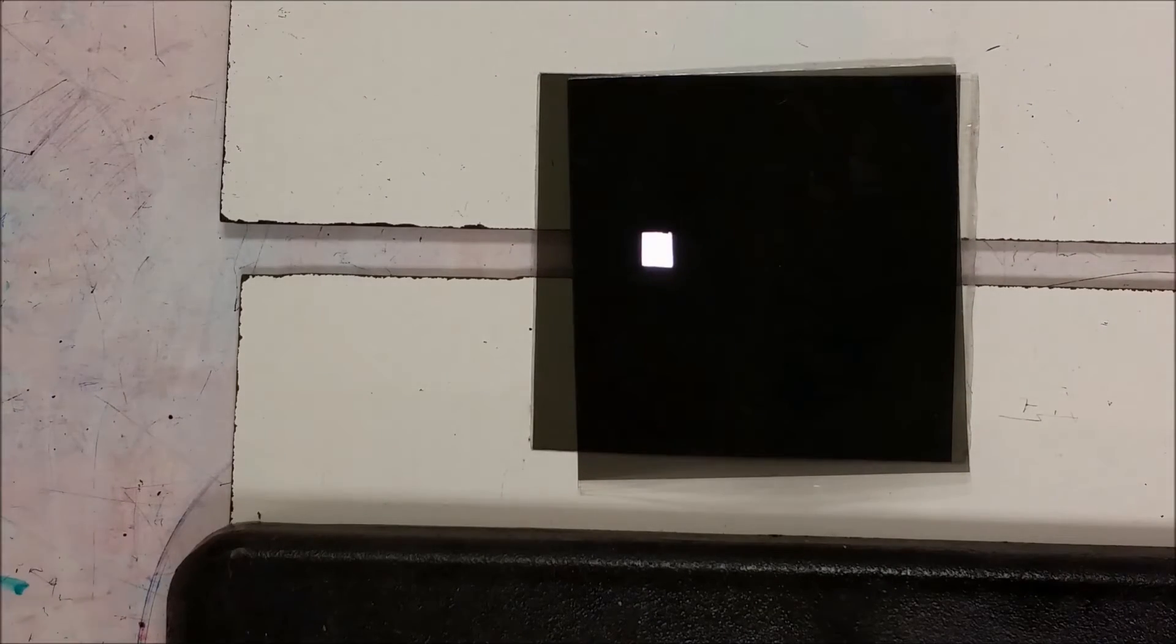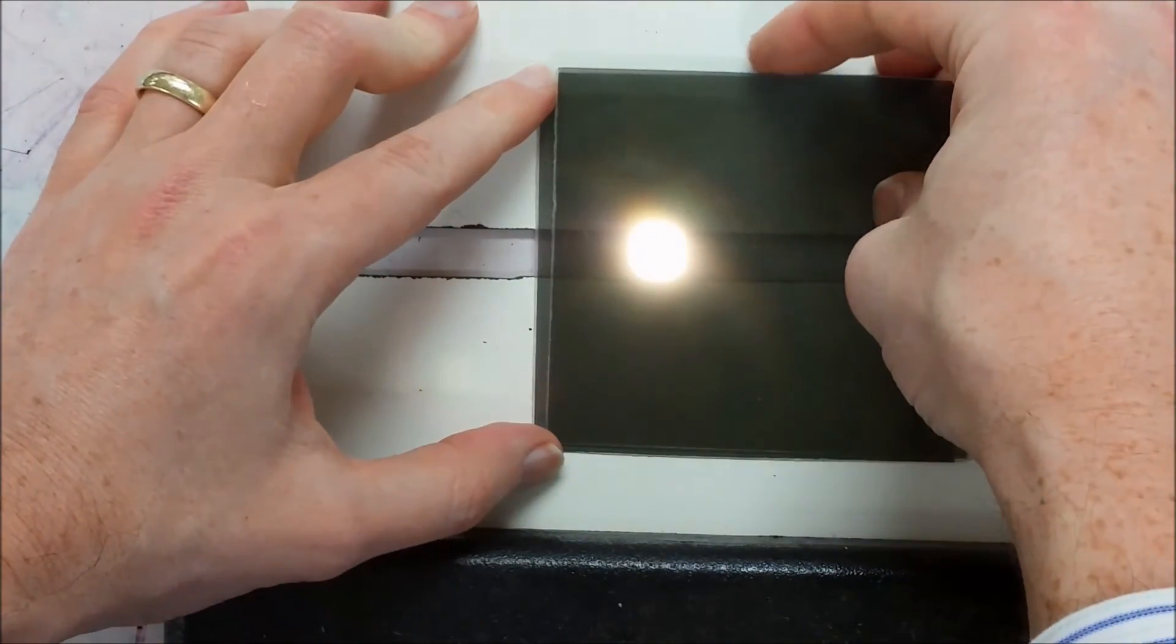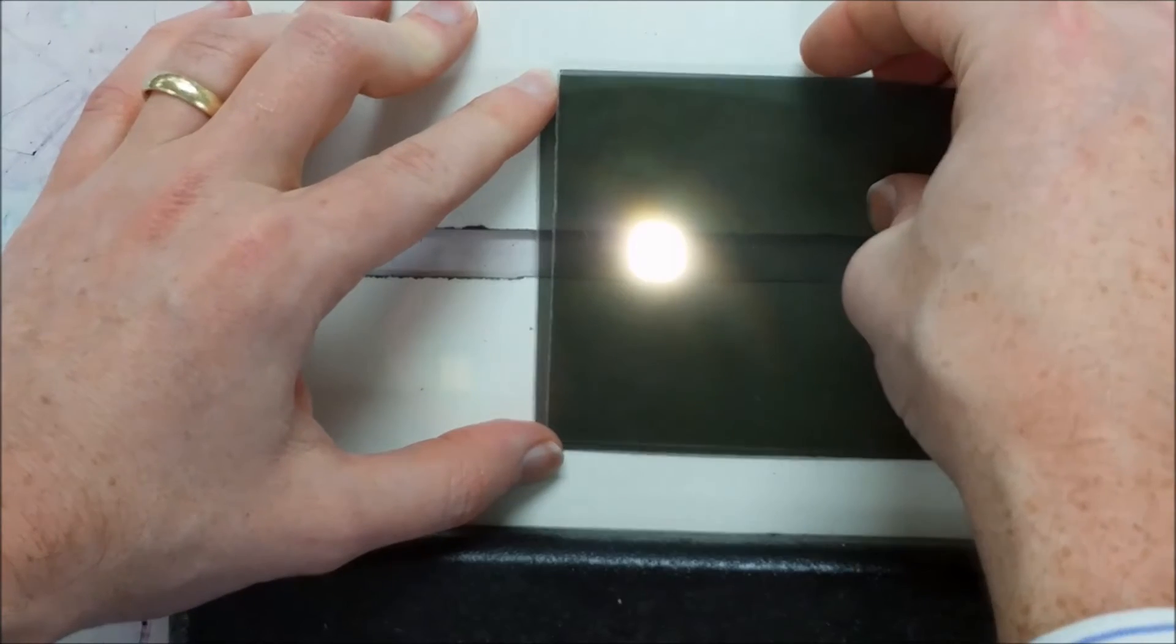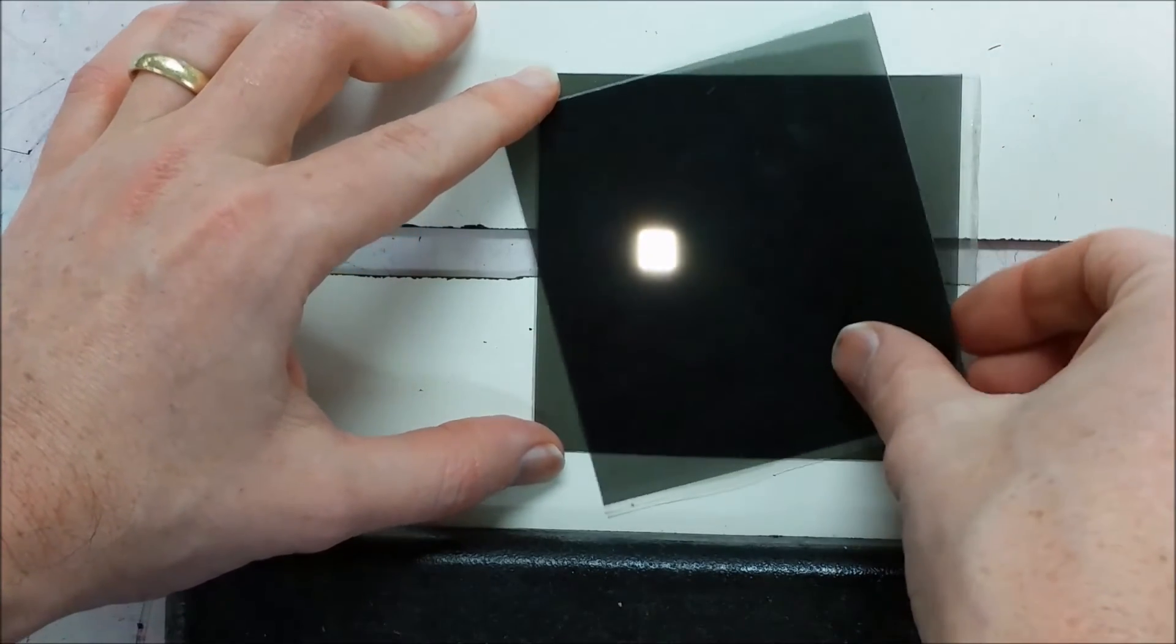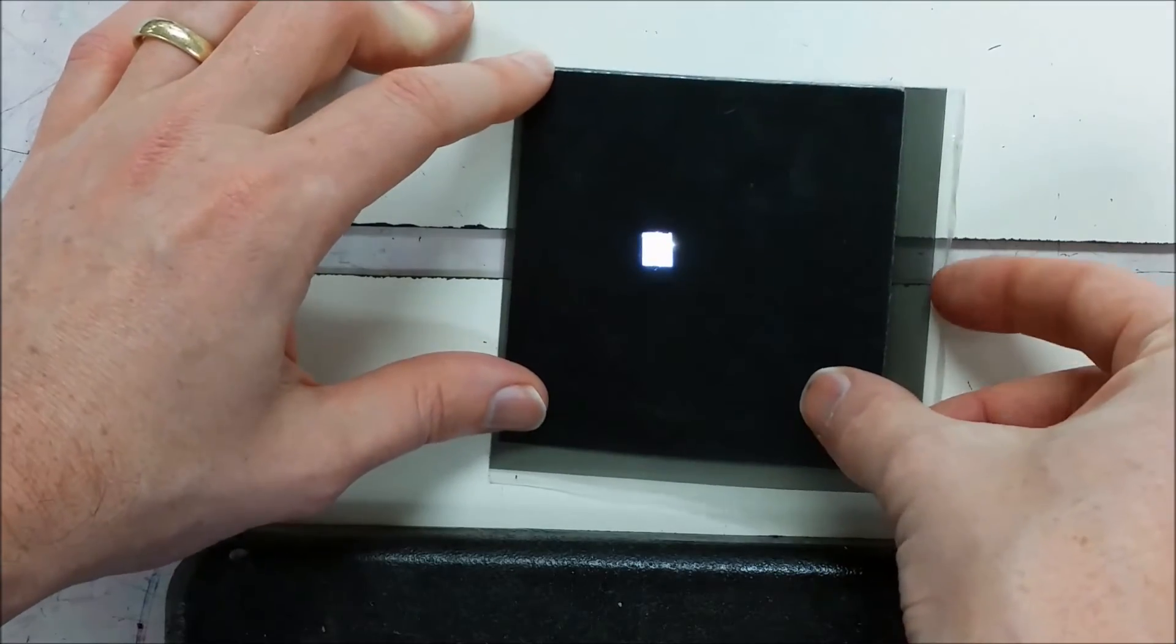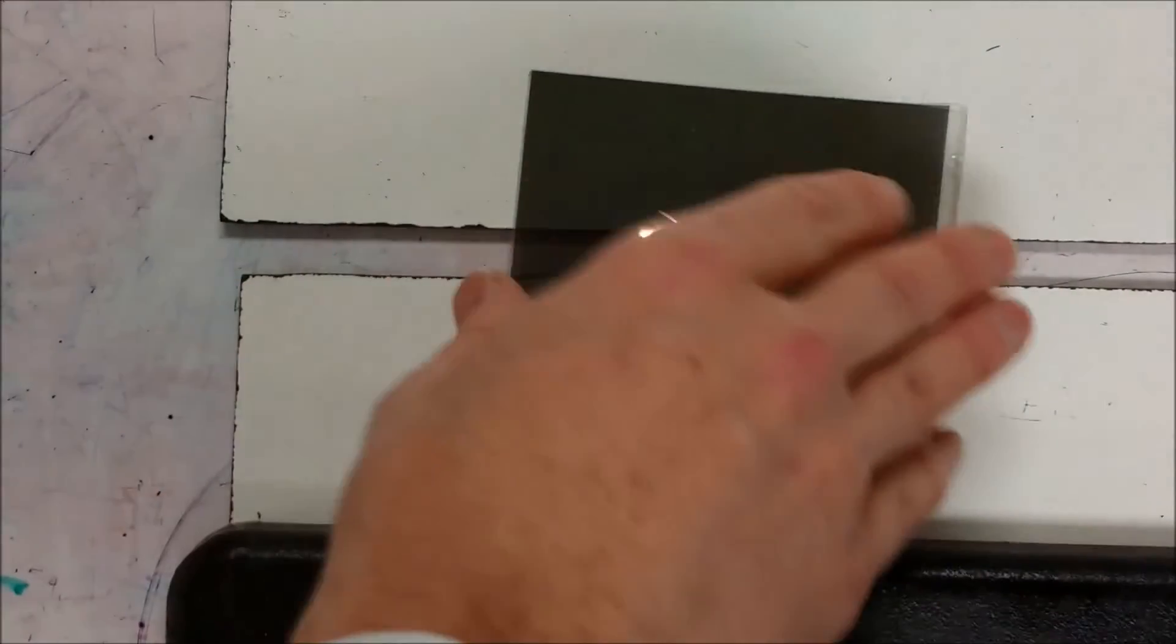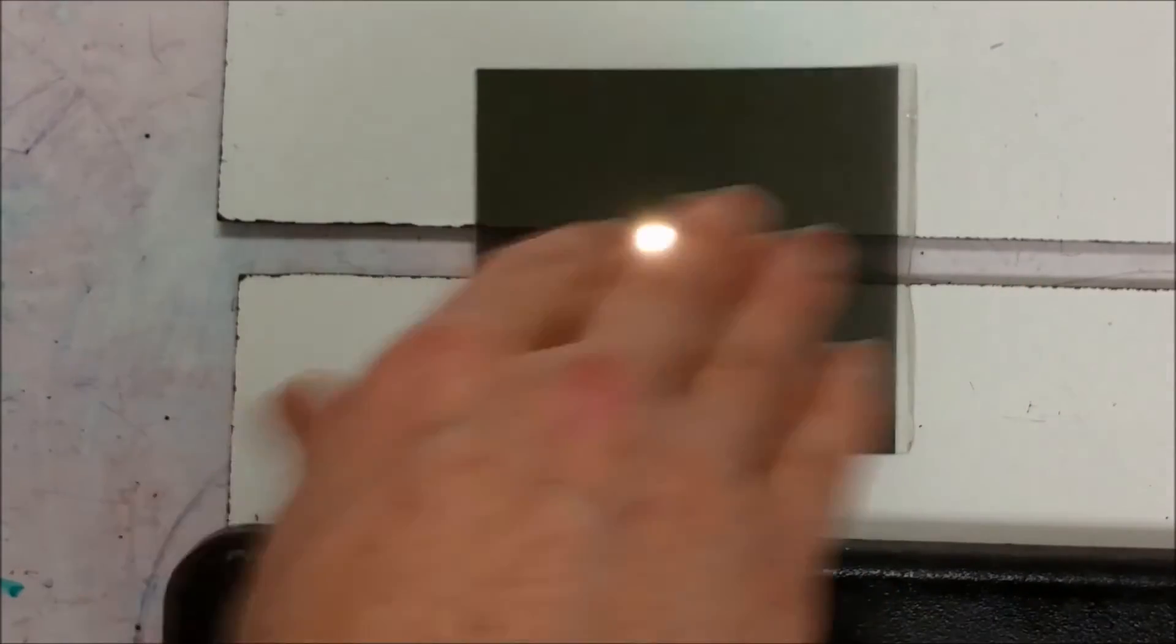So here we have two polarizing filters, and these are currently perpendicular to one another. So if I move them like this, you can see there's a very intense light coming through, that as I rotate them, that light gets blocked out by the second filter. So what's happening here is these are now perpendicular. So the first filter is letting through a plane polarized light that's polarized in one direction.